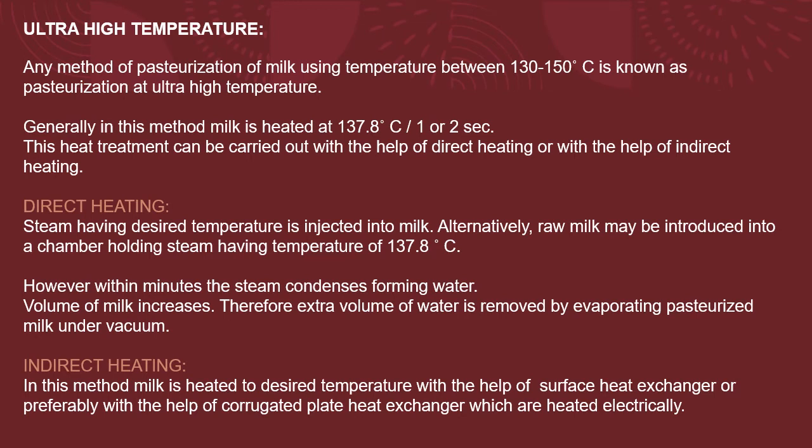The third method is Ultra High Temperature, or UHT. Any method of pasteurization using temperatures between 130 to 150°C is known as pasteurization at ultra high temperature. We used 71.7°C for HTST and 62.8°C for LTH, so 130–150°C is indeed very high. Generally in this method, milk is heated at 137.8°C for one second, so the exposure time is very short despite the very high temperature.